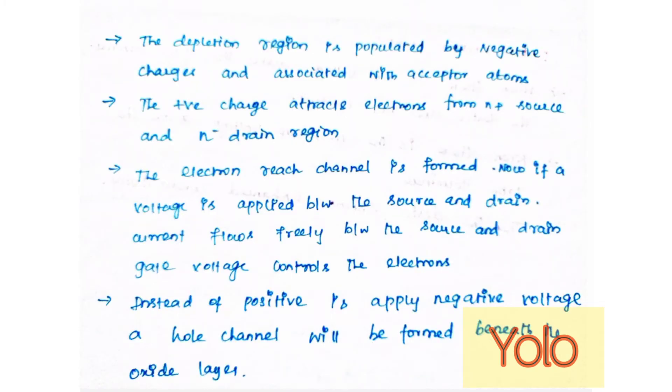These are associated with the acceptor atoms. The positive voltage also attracts electrons from n-plus source and drain regions into the channel. The electron-rich channel is formed. Now if a voltage is applied between the source and the drain, current flows freely between the source and drain.